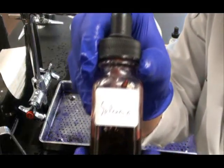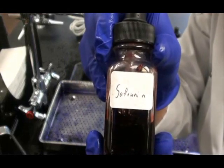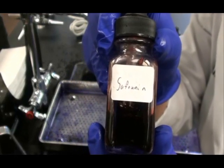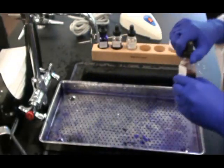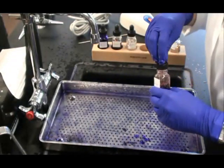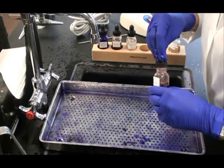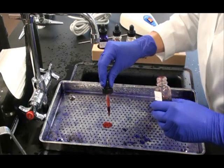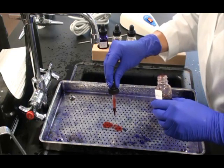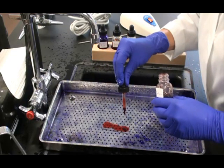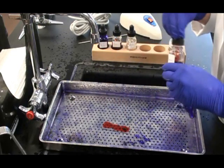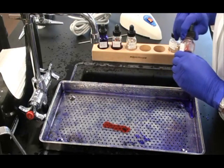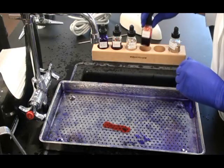We use safranin as a counter stain because it's pink in contrast to the purple crystal violet. I let the drops of safranin fall onto the slide, making sure I cover all three bacterial smears. And then I wait for one minute.